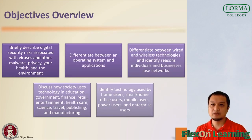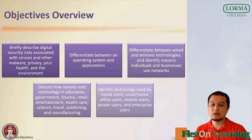Briefly describe digital security risks associated with viruses and other malwares, privacy, health and environment. Differentiate between operating system and applications. Differentiate between wired and wireless technologies and identify reasons for individuals and business uses networks. As well as discuss how society uses technology in education, government, finance, retail, entertainment, healthcare, science, travel, publishing and manufacturing. And lastly, you should be able to identify technology used by home users, small home office users, mobile users, power users and enterprise users.